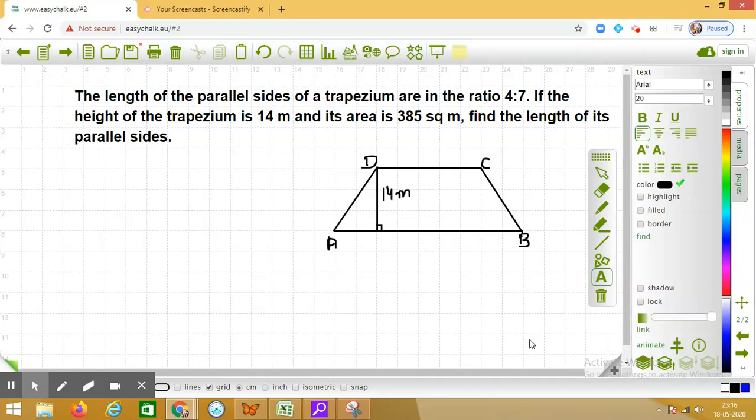Dear students, let us solve this question. The length of the parallel sides of a trapezium are in the ratio 4 is to 7. If the height of the trapezium is 14 meters and its area is 385 square meters, find the length of the parallel sides.